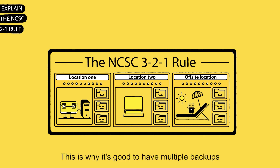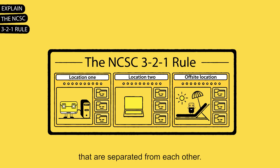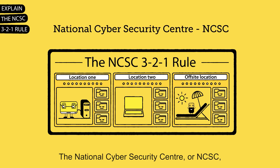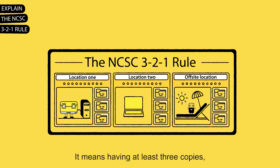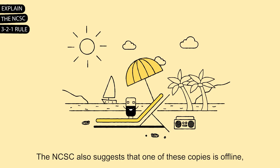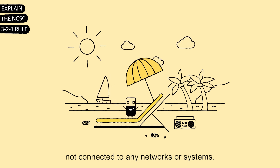This is why it's good to have multiple backups that are separated from each other. The National Cyber Security Centre, or NCSC, has developed the 3-2-1 rule as a rule of thumb for storing multiple backups. It means having at least three copies on two devices and with one copy off-site. The NCSC also suggests that one of these copies is offline, not connected to any networks or systems.